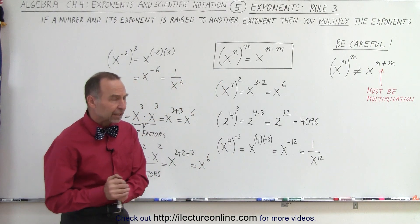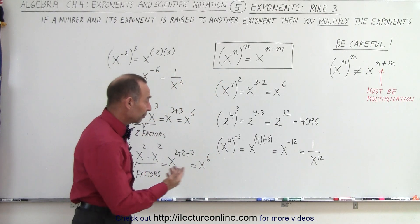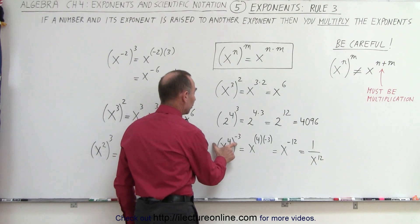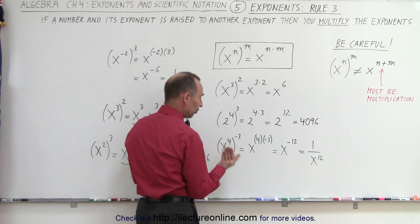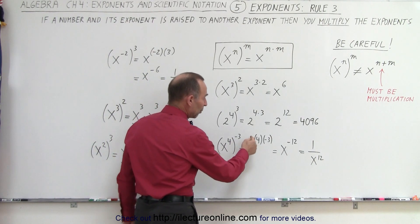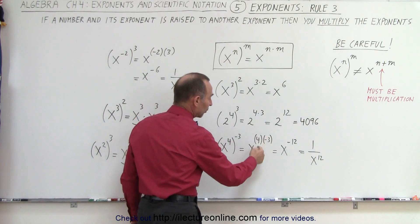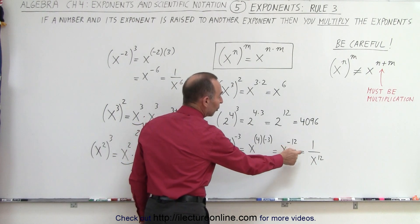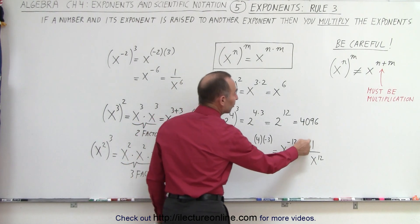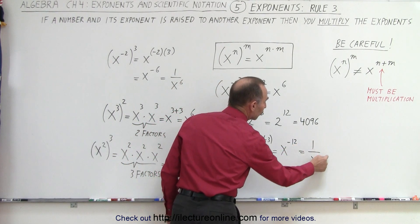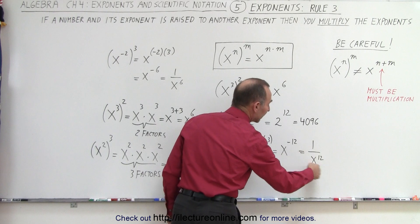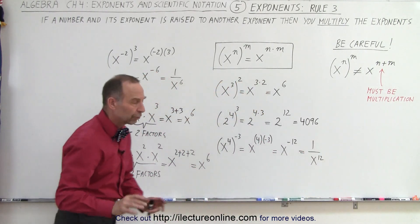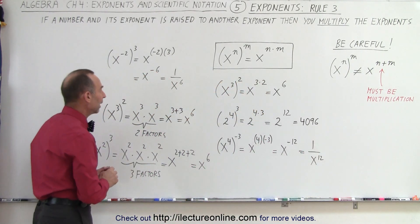And what if you have a negative exponent? For example, x to the fourth power raised to the minus 3 power. The rule is still the same — we multiply exponents, so you get x to the minus 12, which can then be written as 1 over x to the twelfth power. We'll take a look at that rule closer later on.